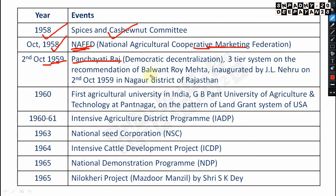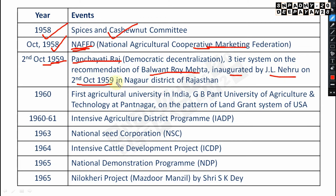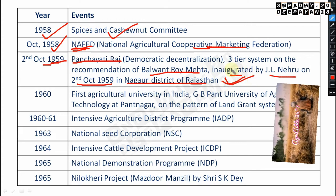On 2nd October 1959, the Panchayati Raj democratic decentralization three-tier system was introduced — very very important — on the recommendation of Balwantray Mehta Committee and inaugurated by Jawaharlal Nehru on 2nd October 1959, in Nagaur district of Rajasthan, on the occasion of Mahatma Gandhi's birth anniversary.